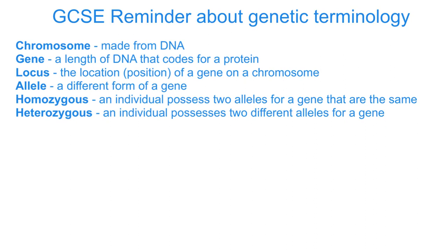Before we start, just a reminder about some genetic terminology from GCSE. Starting off with chromosome — that's made of DNA. The gene is a length of DNA that codes for a protein or characteristic. The locus is the location, the position of a gene on a chromosome.